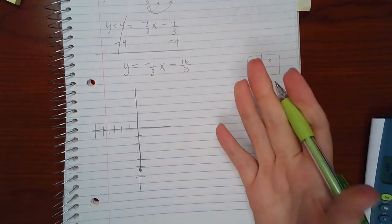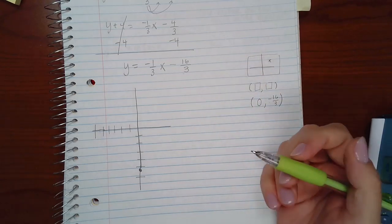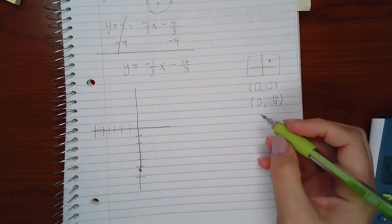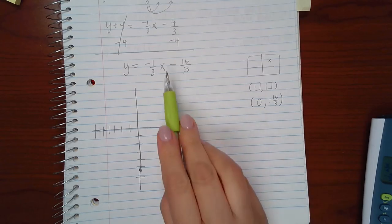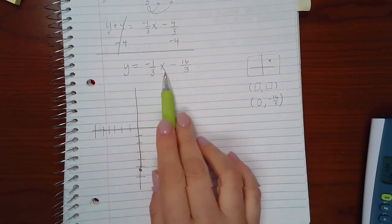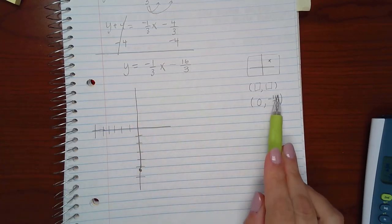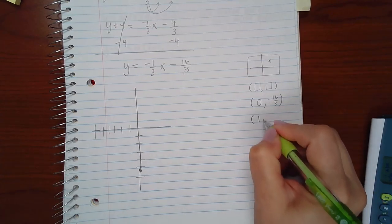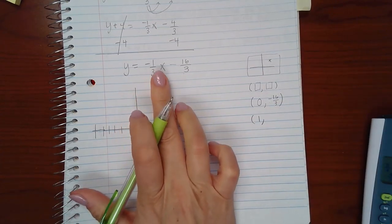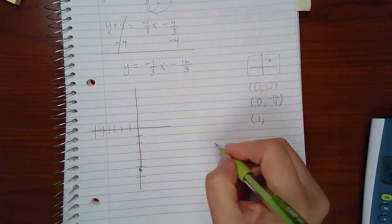Now, in order for me to get a second point, it's going to be a little bit more complicated to get. If I were to plug in 0 here, this would zero out, and I would end up with that negative 16 over 3. However, if I plug in a 1 into this function, what would I get?